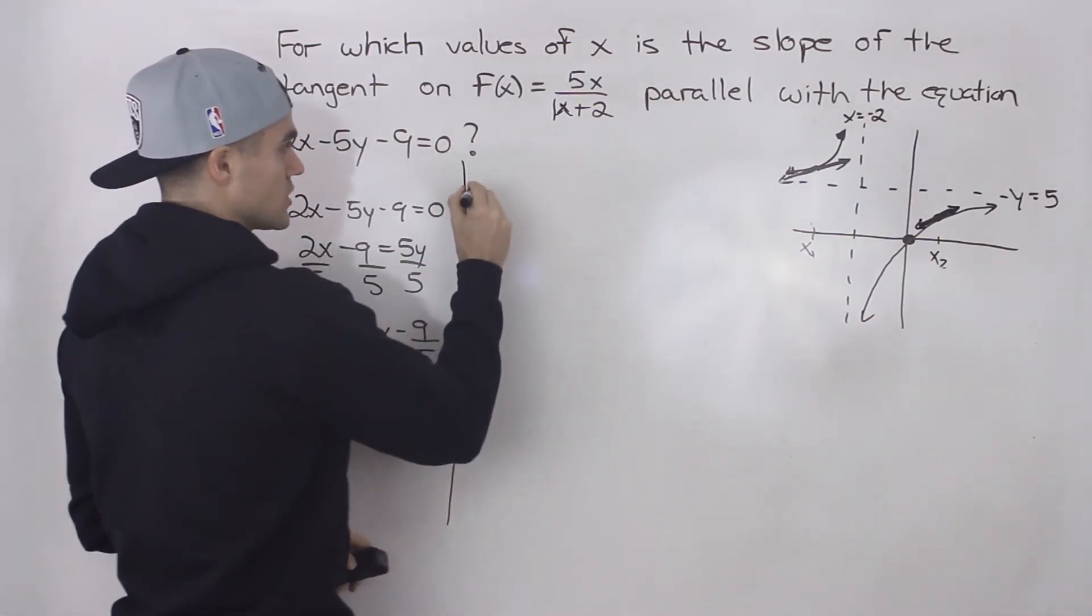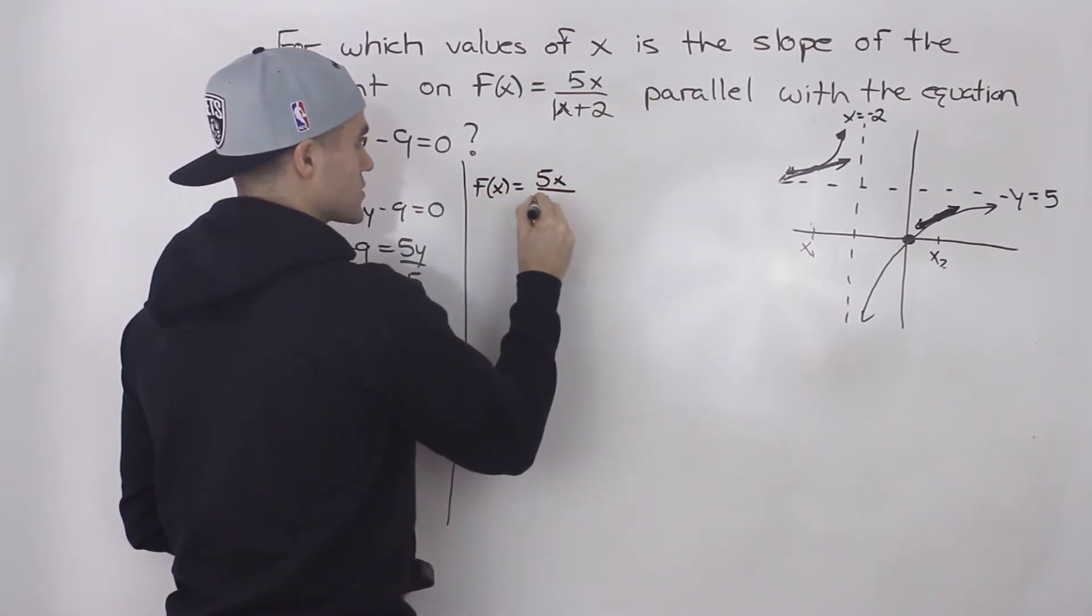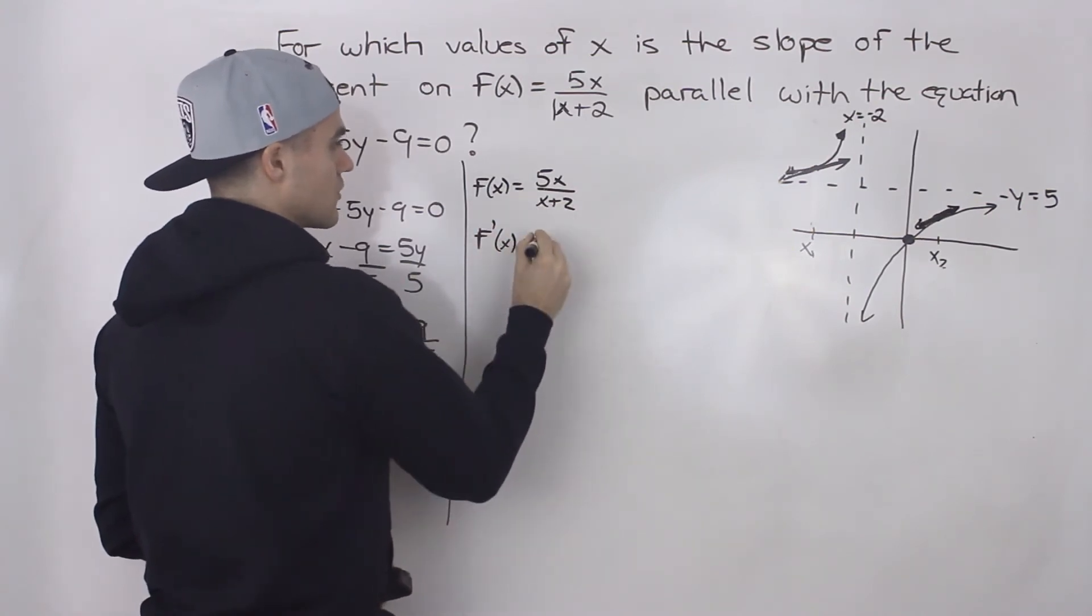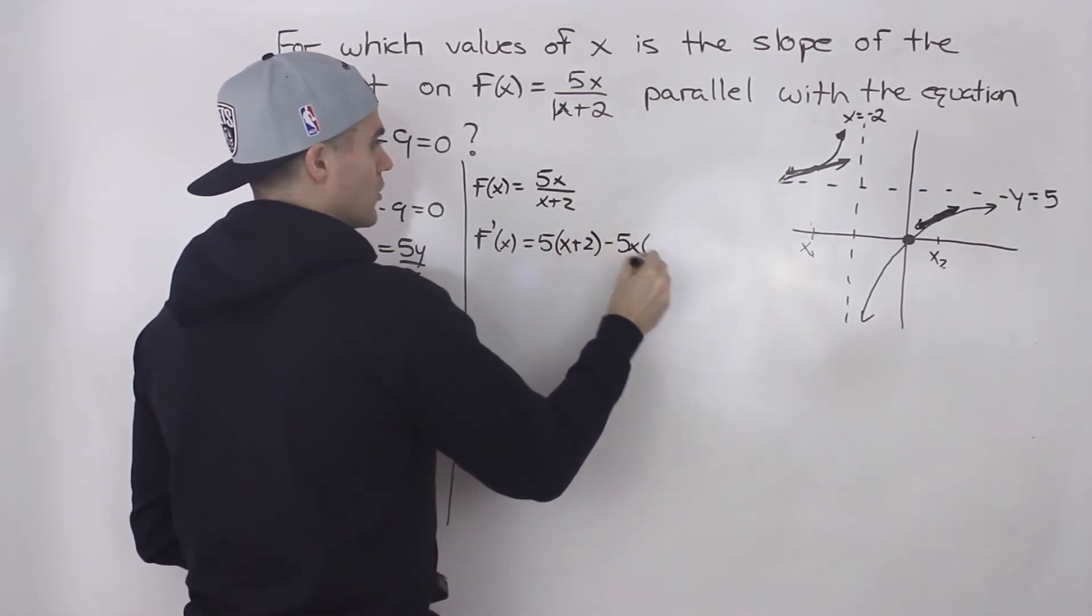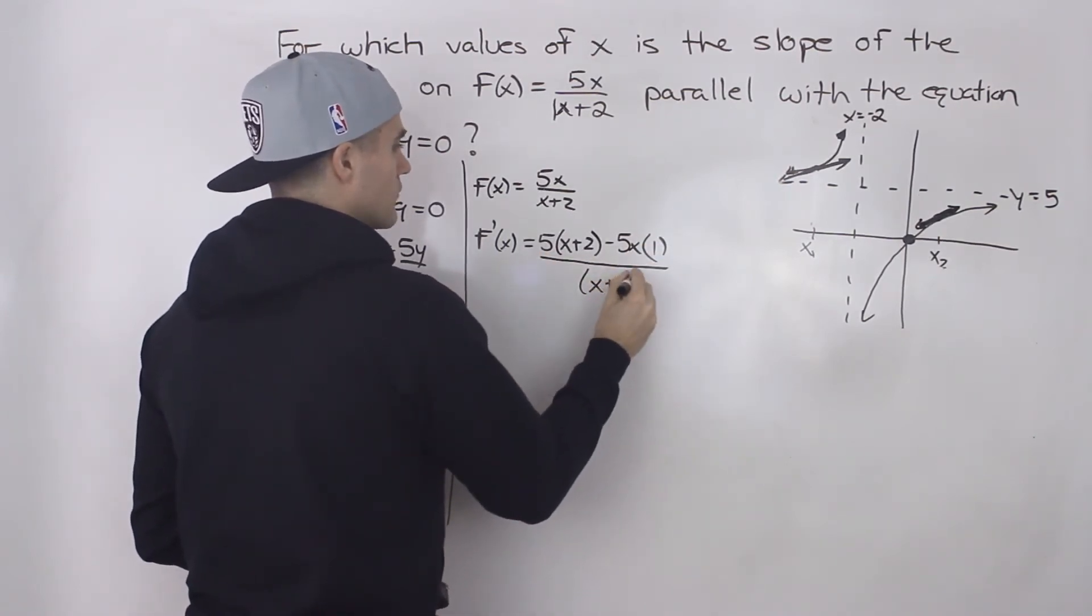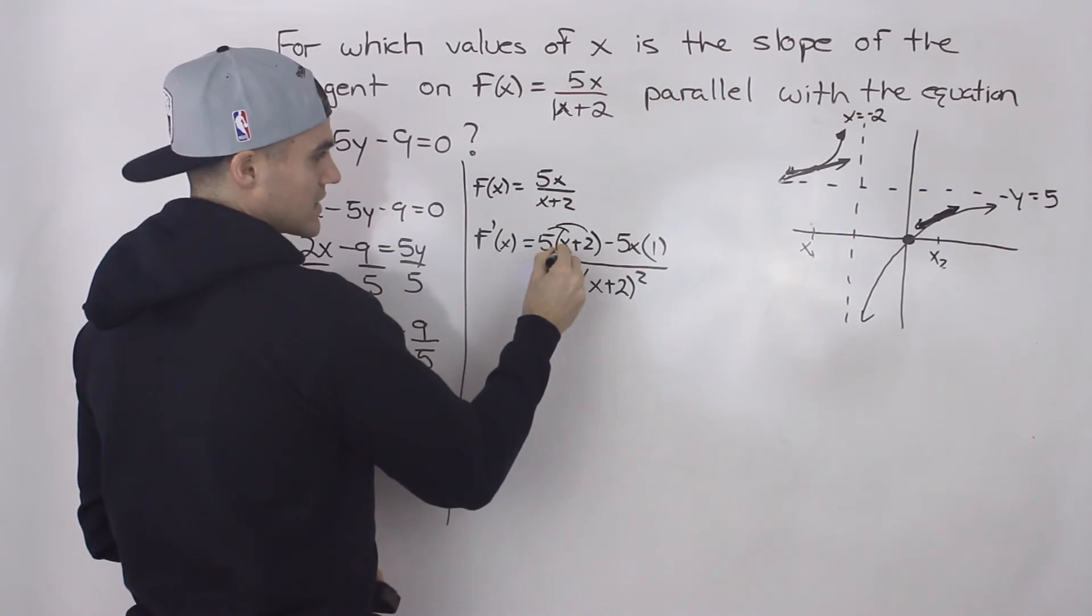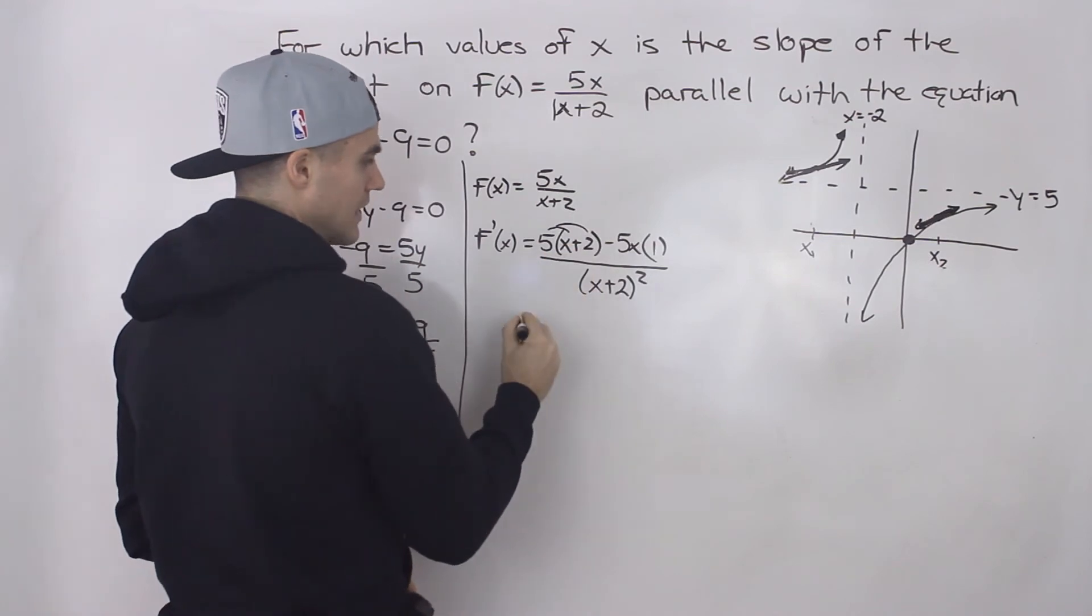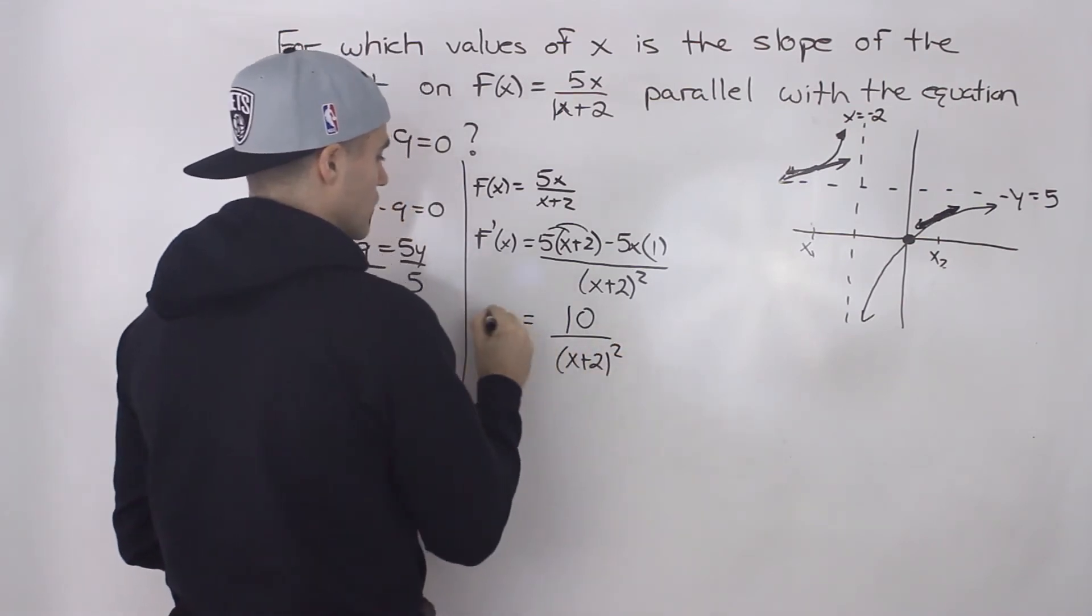So if we have this function here, 5x over x plus 2, what's the derivative going to be? We can use the quotient rule. So take the derivative of the top multiply by the bottom, then subtract the top function multiplied by the derivative of the bottom, which is just 1, all over the bottom function squared. So if we distribute the 5 inside this bracket we would have 5x, and then notice there's a minus 5x here. So those 5x's will cancel out and we'll just be left with 10 over x plus 2 squared for the derivative.